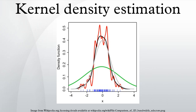Intuitively one wants to choose h as small as the data allow, however there is always a trade-off between the bias of the estimator and its variance. More on the choice of bandwidth below. A range of kernel functions are commonly used: uniform, triangular, biweight, triweight, Epanechnikov, normal, and others.